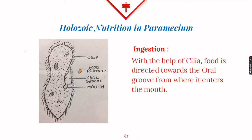Just like amoeba, in paramecium also holozoic mode of nutrition occurs. But unlike amoeba, paramecium does not have an irregular shape; it is elongated, round at the top but pointed at the bottom, and the whole body is covered with hair-like projections called cilia. The oral groove is the part where the mouth is present. As the food particle approaches paramecium, cilia inside the oral groove start moving very fast, directing the food particle along with water towards the oral groove and then into the mouth. Once inside the body of paramecium, digestion, absorption, and assimilation occur in the same manner as in amoeba.